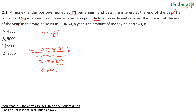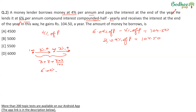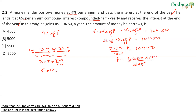The amount the person receives is 6.09% of P, and the amount he pays back is 4% of P. The difference is what he earns, given as 104.50 rupees. So 2.09% of P = 104.50, meaning 2.09/100 × P = 104.50, or P = 104.50 × 100 ÷ 2.09. Writing this as 10450 ÷ 209, clearly 209 × 5 = 1045, so the principal is 5,000. The amount of money he borrows is 5,000.